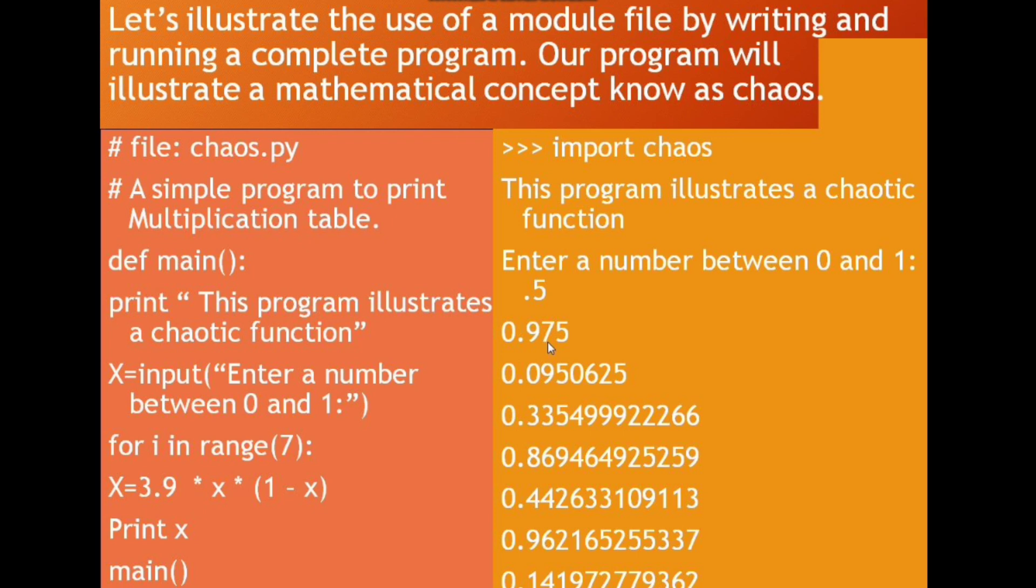Again it repeats. The for loop will go, then our x value is 0.975. We are getting from this function 3.9 times x value now 0.975 times (1 minus 0.975), close the bracket. Then after we are getting the second line. Like this it is going on seven times.